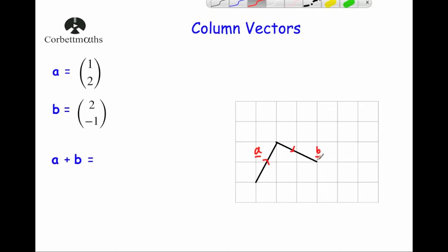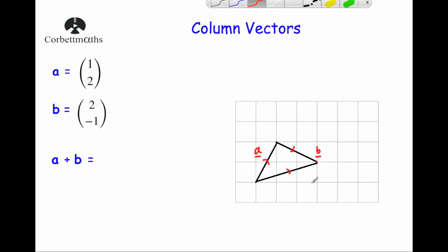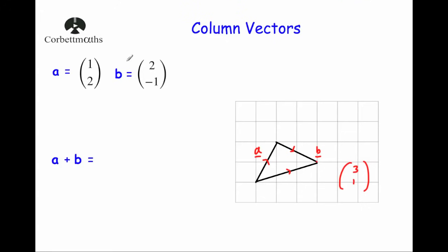I went one right and two up, then two right and one down, and overall finished three squares to the right and one square up. If I make that one journey straight from the starting point to the finishing point, that's the vector (3, 1). So algebraically: 1 + 2 = 3 and 2 + (-1) = 1, giving (3, 1). That matches the diagram. To add column vectors, simply add the top numbers together and add the bottom numbers together.